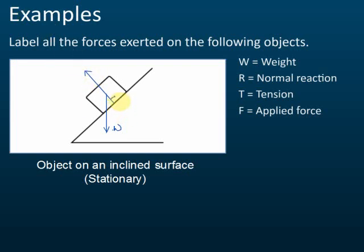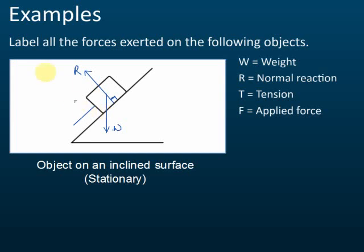The normal reaction is 90 degrees with the surface because the block presses on the surface and the surface pushes back — that is the normal reaction. We need one more force, otherwise the object would slide down. Since it's stationary and not moving, we need an applied force pushing it upward.